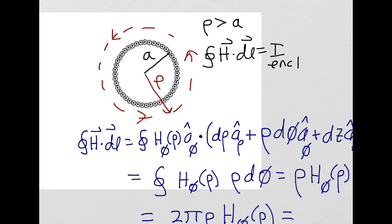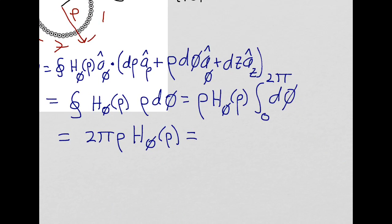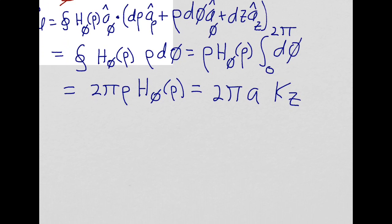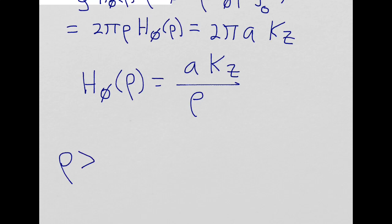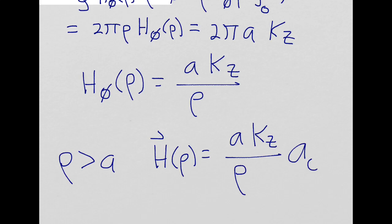This equals the current enclosed. The sheet current density around the cylinder is k sub z amps per meter, so we multiply by the circumference of the cylinder, which is 2 pi times a. So the current enclosed equals 2 pi a times k sub z. Solving for our H component, we get H sub phi equals a times k sub z over rho. So for rho greater than a, the magnetic field intensity is a times k sub z over rho in the phi direction.